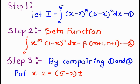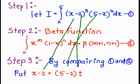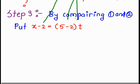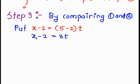By comparing equations 1 and 2, we put x minus 2 equal to (5 minus 2)t, that is 3t. We do this substitution to make the limits 0 to 1 and convert (x minus 2) into t. Here, x minus 2 is 3t.